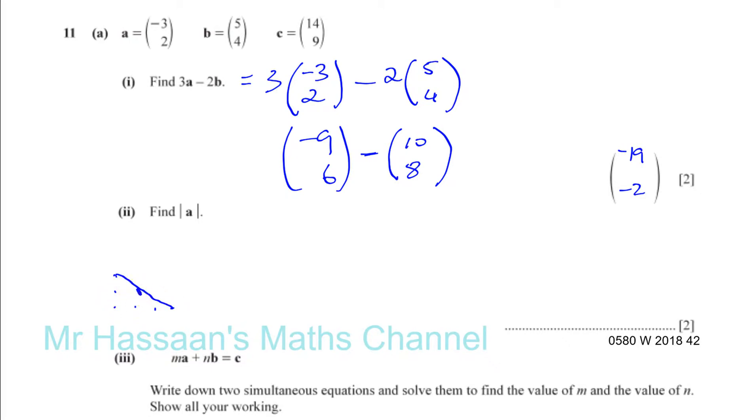Now if you think about it, we can use Pythagoras' theorem here. That's the right angle, this is 3 units, that's 2 units. So the magnitude of the vector a is going to be given simply by the square root of 3 squared plus 2 squared. So it doesn't matter about the sign, because that's going to be squared.